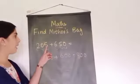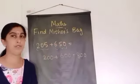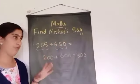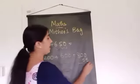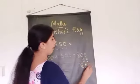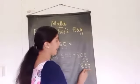Then what is remaining here? 5 and 50. 5 plus 50? 55. So you can add 800 plus 55. 855. You will get answer 855.